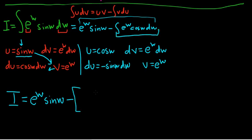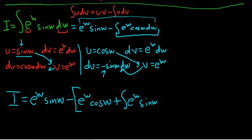So it's uv, so it's going to be e to the w cosine w minus the integral of vdu. But there's already a minus here, so it's going to be plus. So plus e to the w sine w dw. Boom.